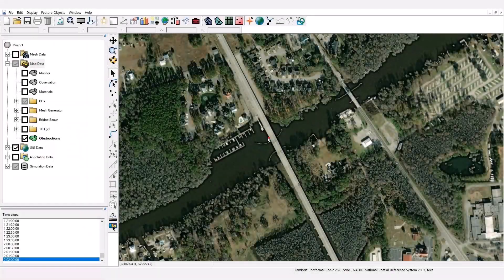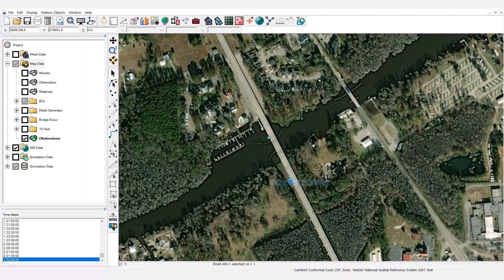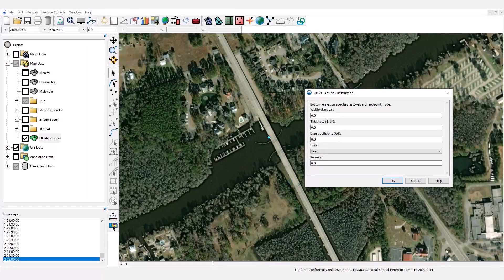When representing piers with obstructions, SRH adds a drag force to represent the head loss associated with the pier.